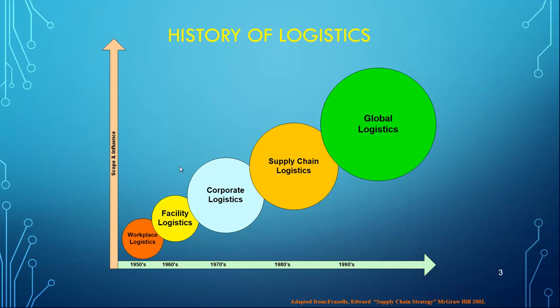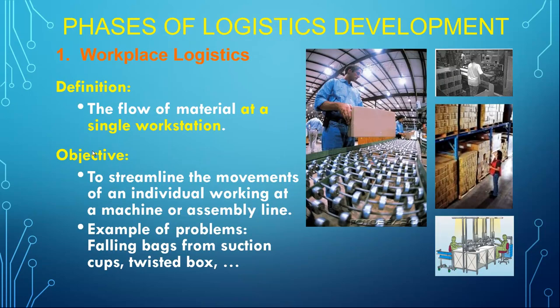Looking at the scope and influence, you can see that over the past decades, logistics has evolved from being at the workplace level — looking at workstation logistics — to the facility level, to the corporate level, to the supply chain level, and then to global logistics. The next few slides will address each one of these levels separately.